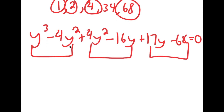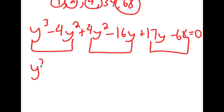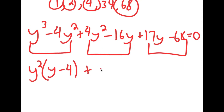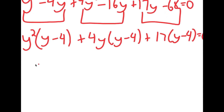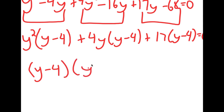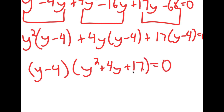From y to the power of 3 minus 4y squared, I'm going to factor out y squared — the greatest common factor — so I get y squared times y minus 4. Plus, from 4y squared minus 16y, I'm going to factor out 4y, so I get 4y times y minus 4. And from 17y minus 68, I'm going to factor out 17, so I get 17 times y minus 4, all equal to 0. Now if I factor out y minus 4, I get y minus 4 times y squared plus 4y plus 17 is equal to 0.